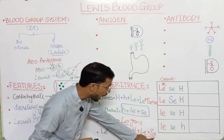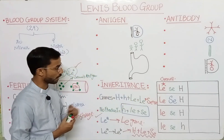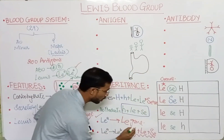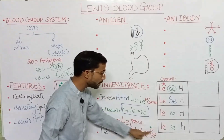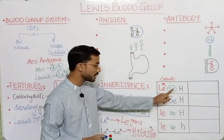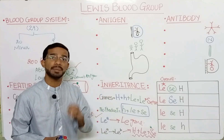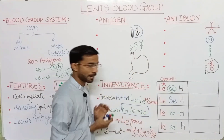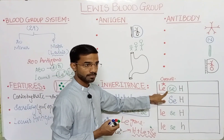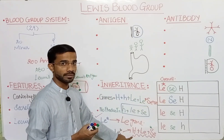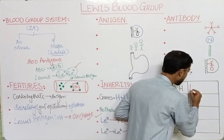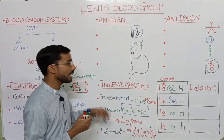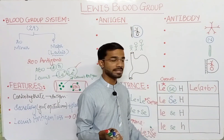If capital LE and capital H are present but Se is small (not capital), then this condition is not fulfilled. The LEa antigen is present, but it will not convert into the LEb antigen. So in that situation you will see LEa positive but LEb negative.